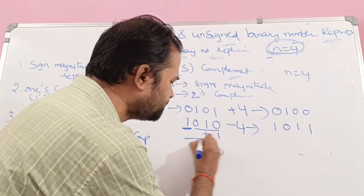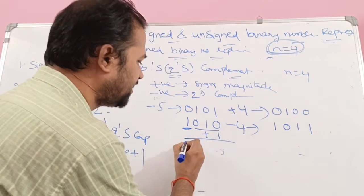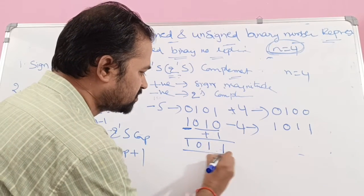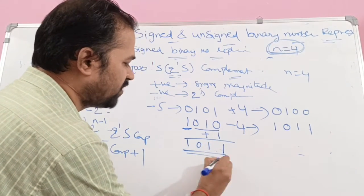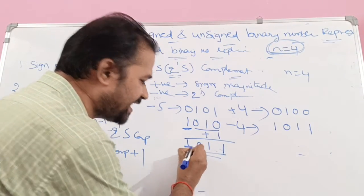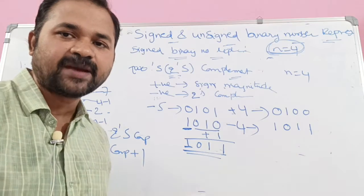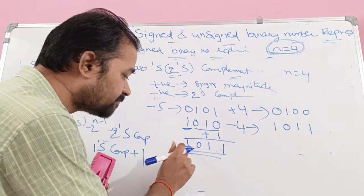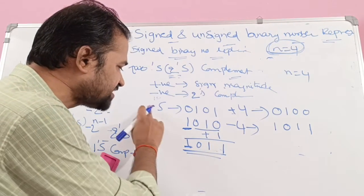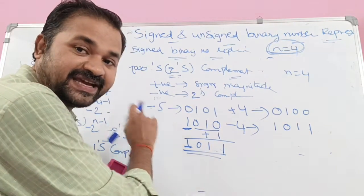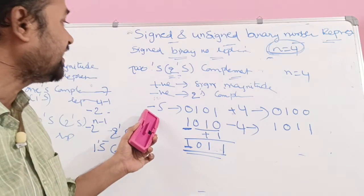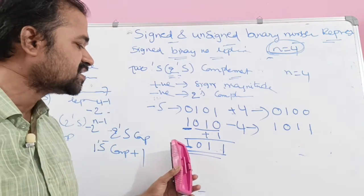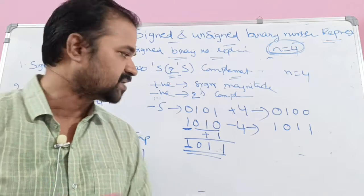Two's complement means we add 1 to the one's complement. So 1010 + 1 = 1011. The first bit is the sign bit — MSB is 1, so it specifies that it is a negative number. So −5 in two's complement notation is 1011.